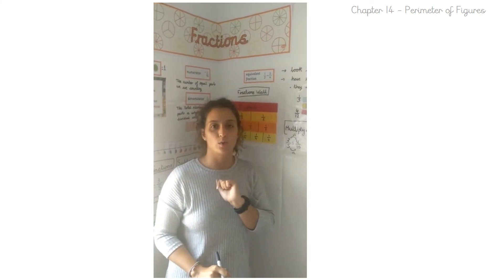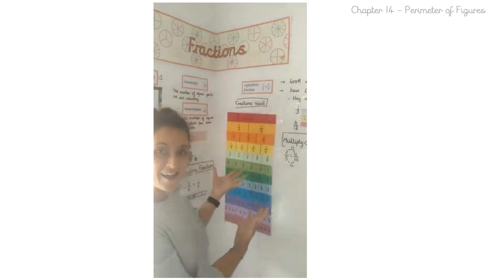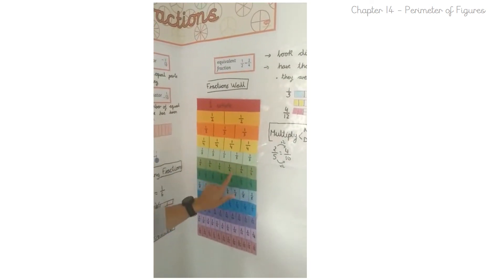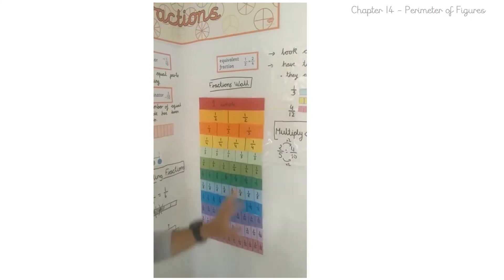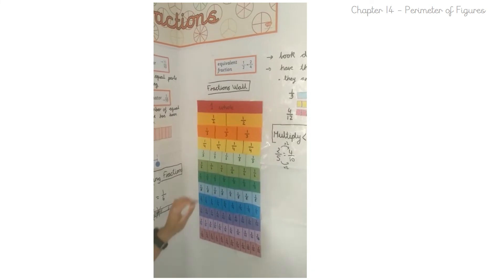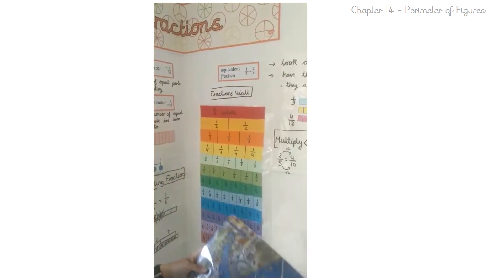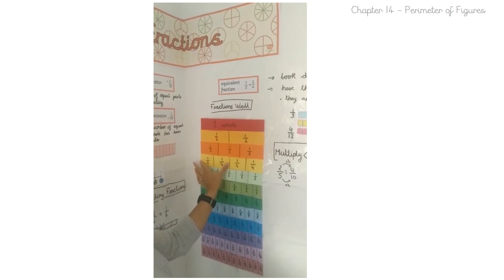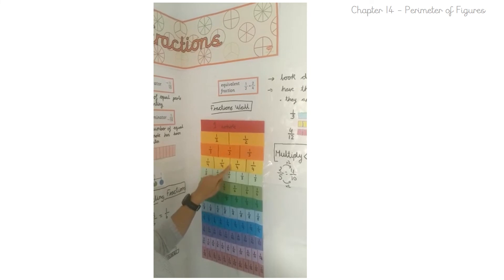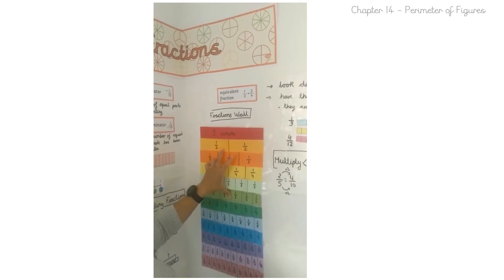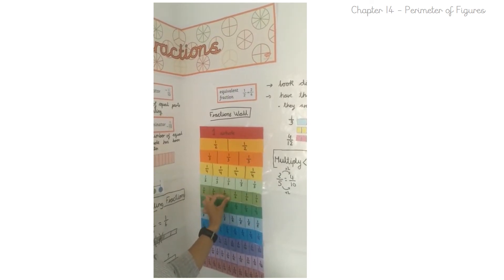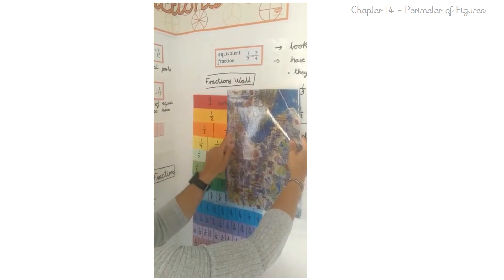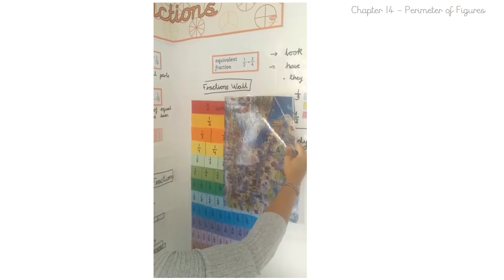Now give me one second and I'll show you the final result. I kept going and I divided my whole into five, six, seven, eight, nine, ten, eleven, and twelve equal parts. So this is my fractions wall, and we can use this to find equivalent fractions. For example, we can clearly see that one half is equivalent to two fourths. If we keep going down, we can also see that one half is equivalent to two fourths and three sixths. We can keep going all the way down to check. You could also use a piece of paper just to see clearly the ones that are equivalent to others.